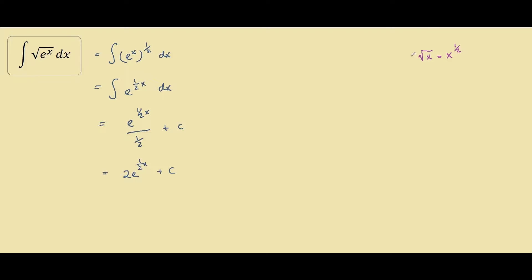And as we stated earlier, e to the power of half is the same thing as square root. So we have 2 square root e to the x plus c. And this is your answer.